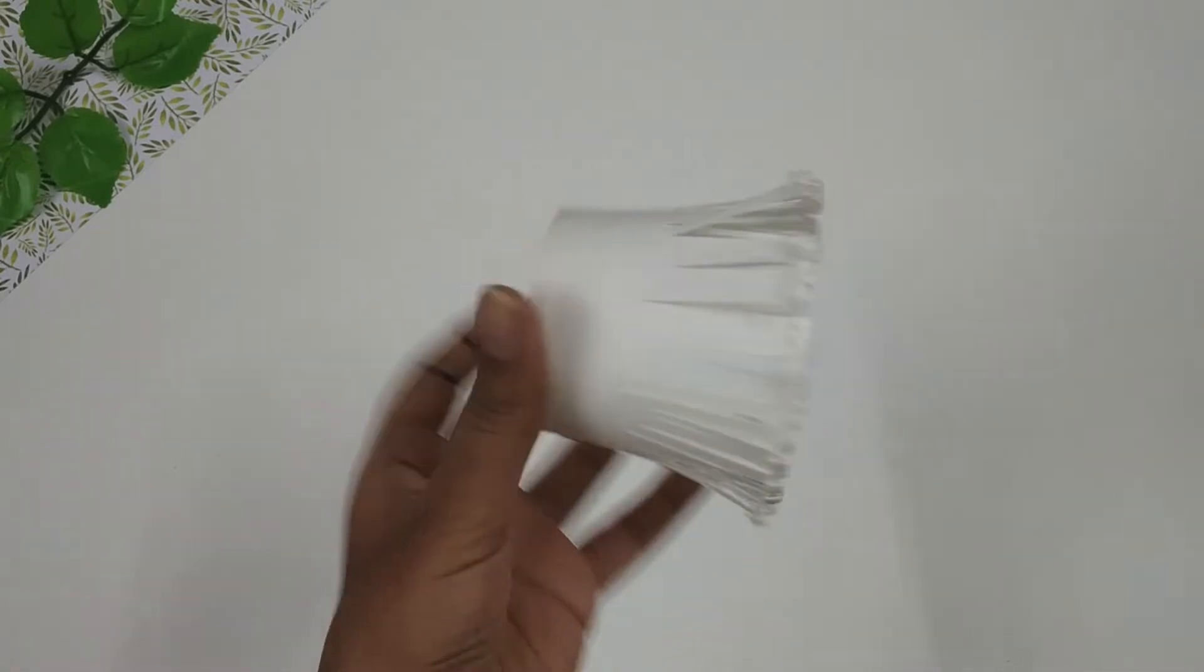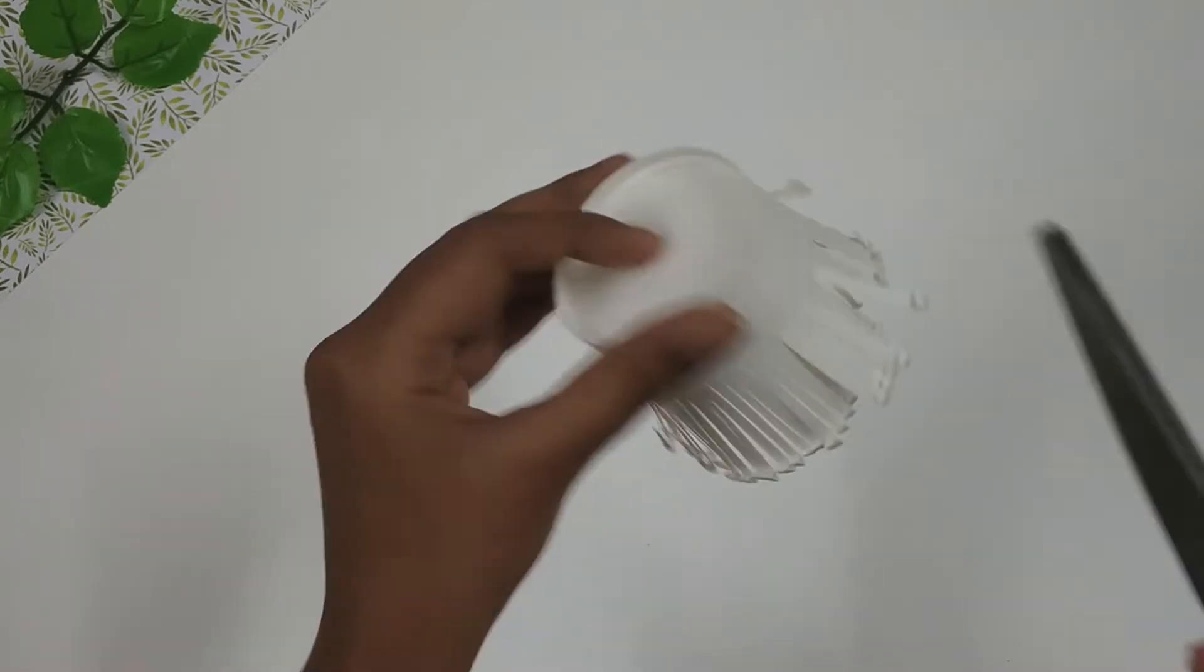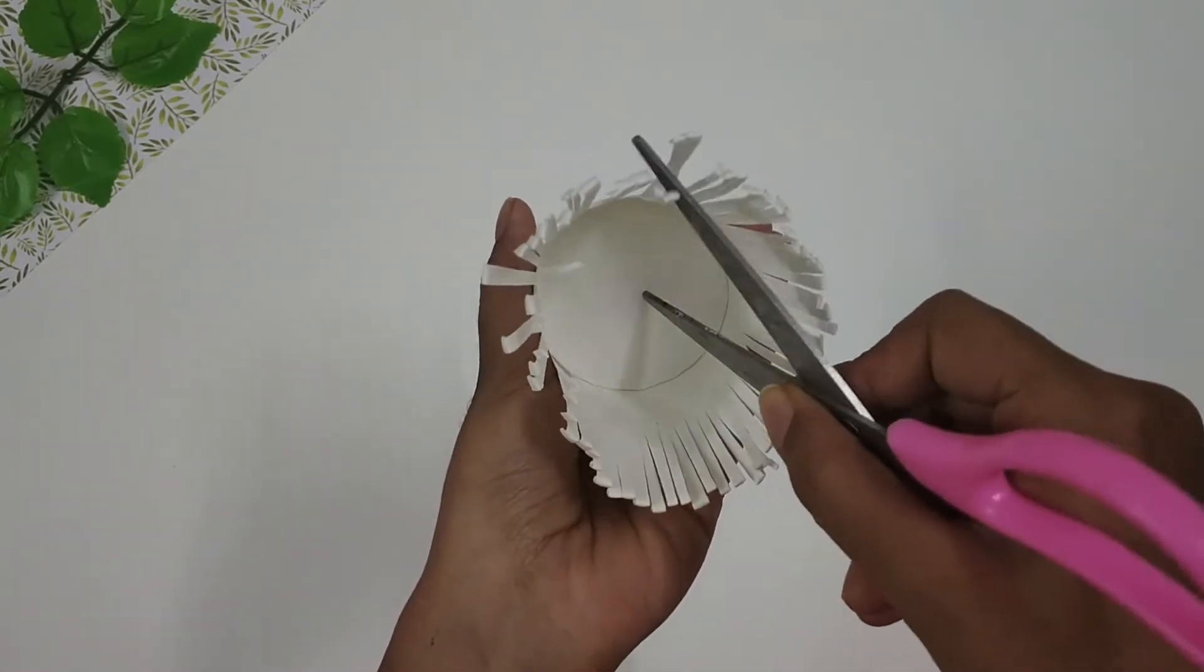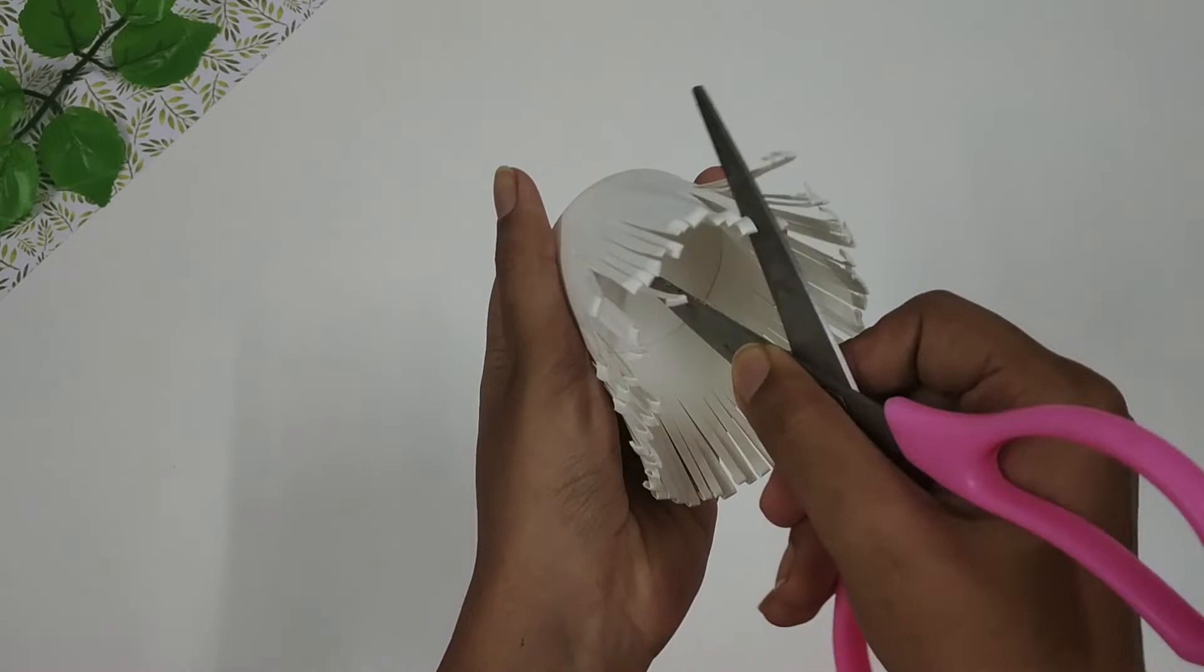Once I have cut out the cup, next I'm going to carefully pierce a hole in the center of the cup to insert the stem.